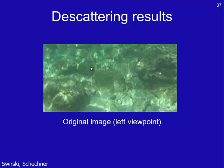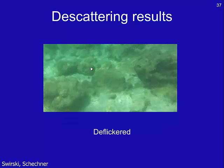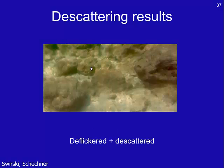After estimating eta, we can de-scatter every image for which we have a range map. This is the original image, this is the de-flickered version, and this is the de-flickered and de-scattered result. The colors of the scene are recovered and the contrast is improved. You may notice the image is slightly blurred due to small stabilization misalignments, which we will address in future research.